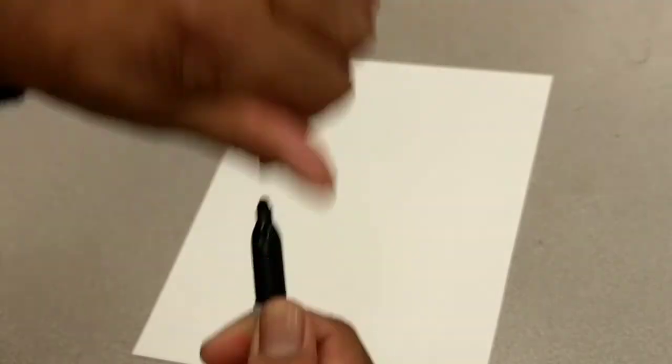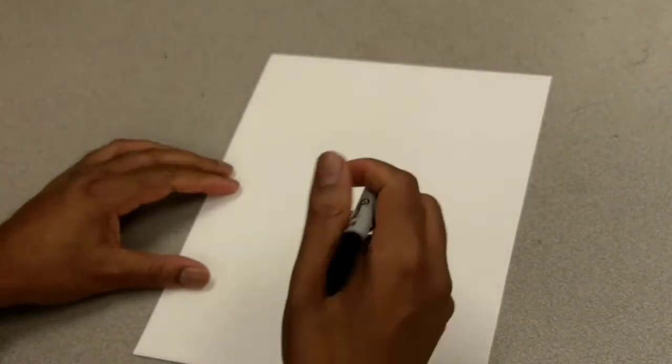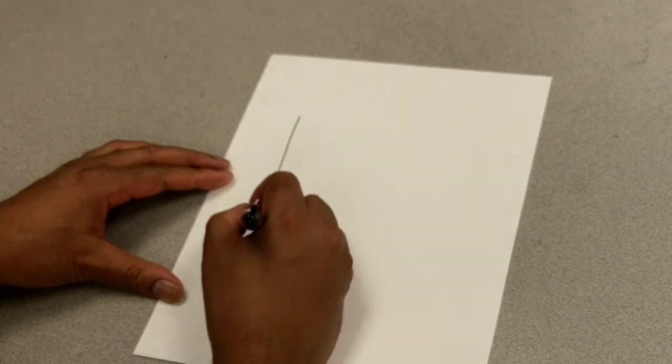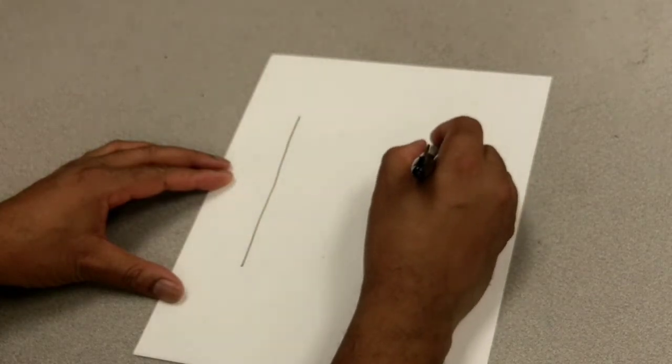Alright, first boys and girls, we're going to take our trusty Sharpie marker, and I'm using the Sharpie so you can see what I'm doing. We're going to draw two lines. One. Two.